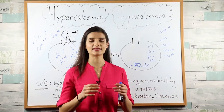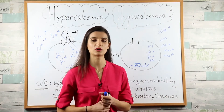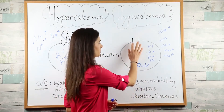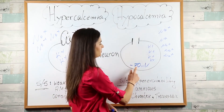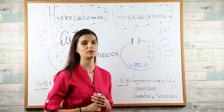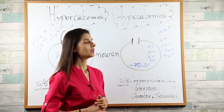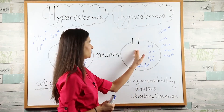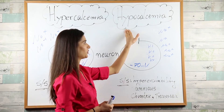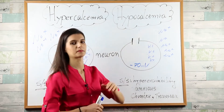Cool, right? Let's discuss hypocalcemia now. Again, this is our neuron with a resting membrane potential of minus 70 millivolts. But what do you think is going to happen with the sodium channel in hypocalcemia?